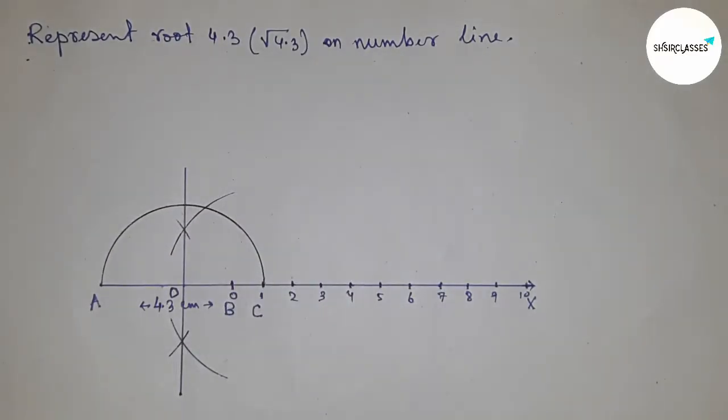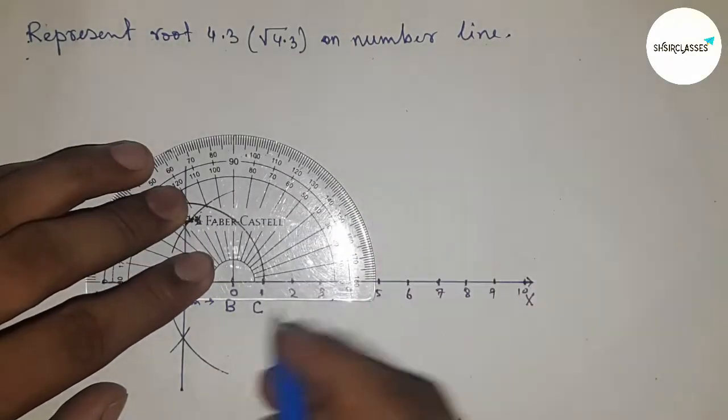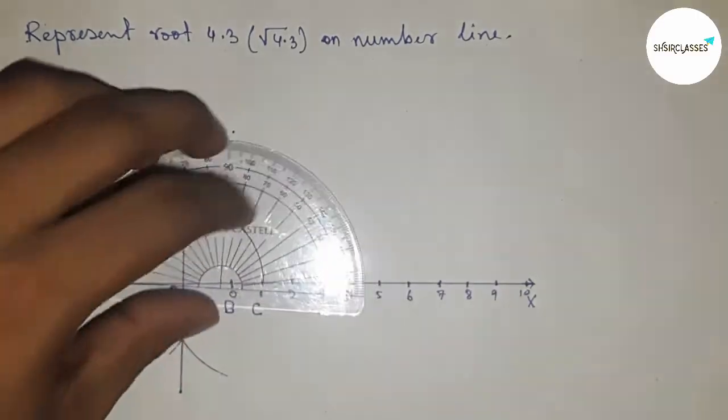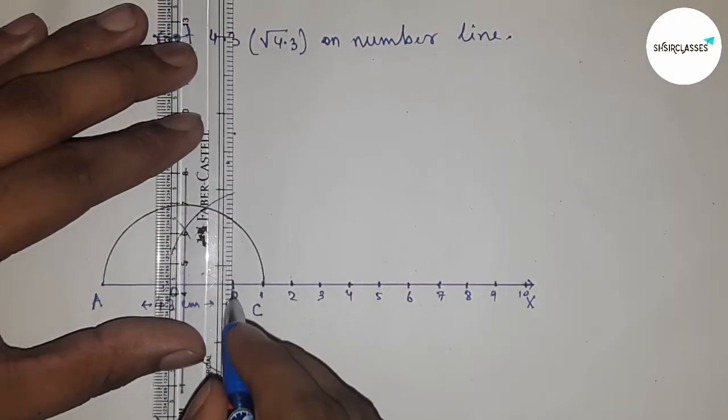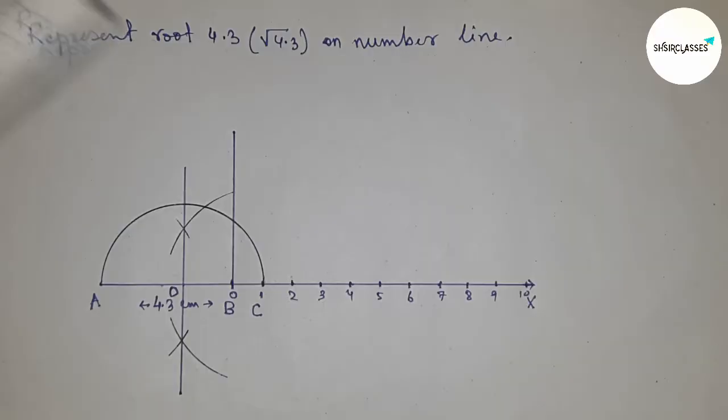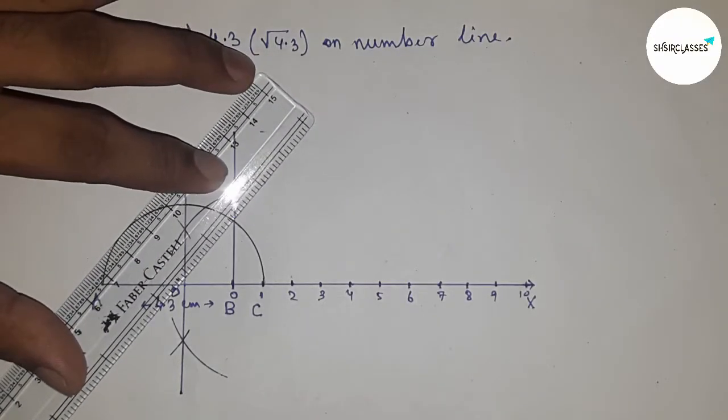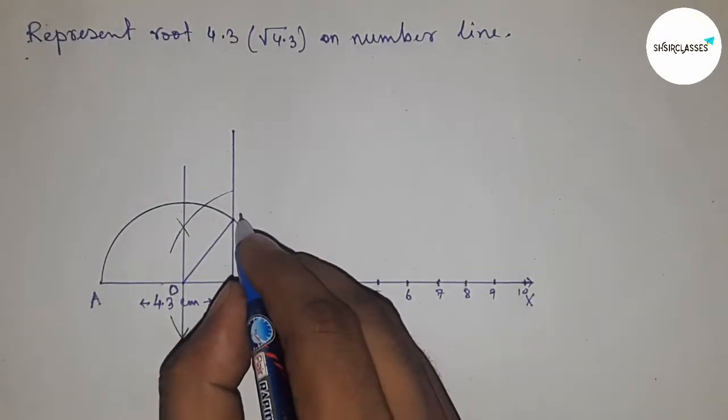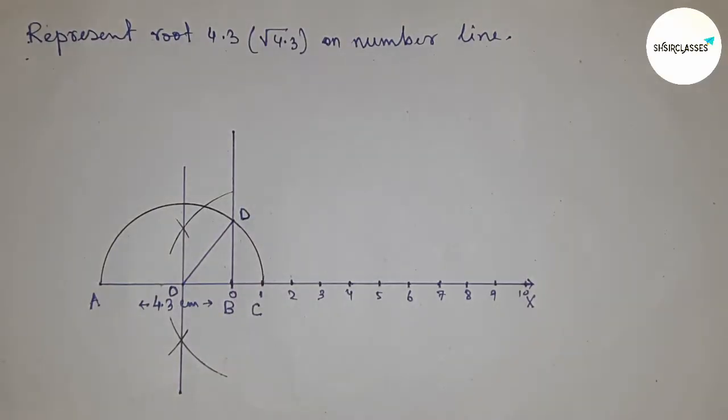Next, drawing a 90 degree angle at point B using a protractor, which meets the semicircle at point D. Joining this, and this is point D.